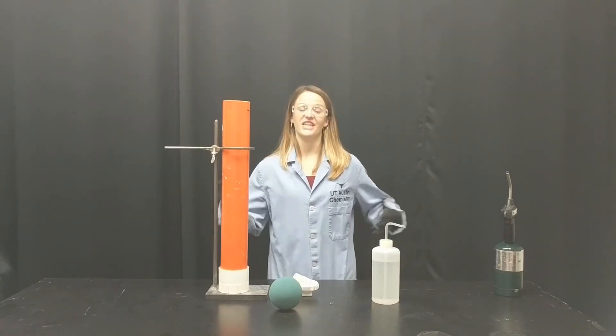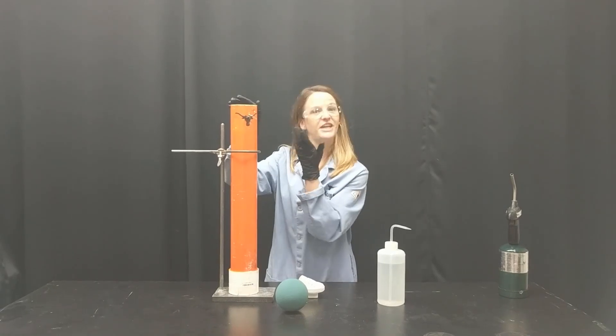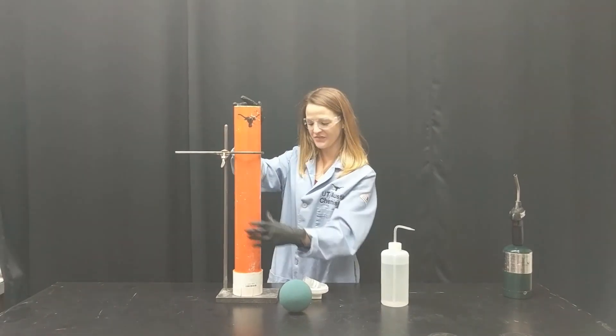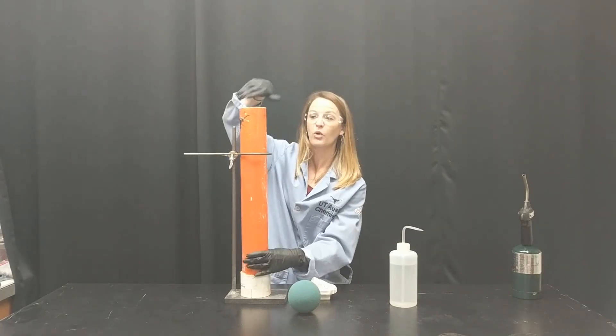This is our carbide cannon demonstration. What you need here is a very fancy PVC pipe spray painted orange with a little longhorn on the front, but you also need to make sure it has a hole here at the very bottom. That's going to be important later.